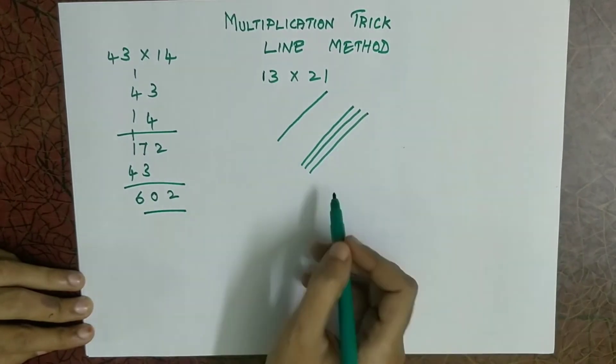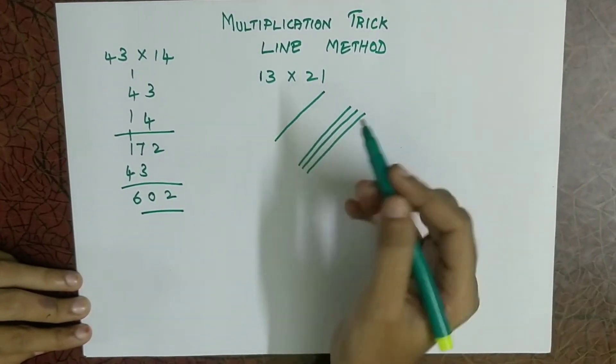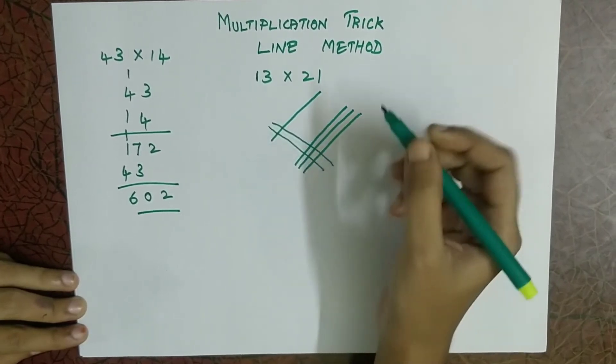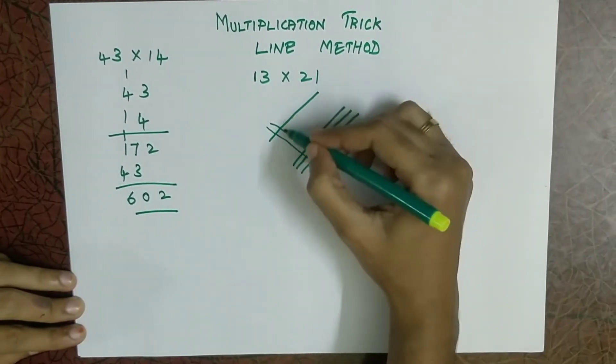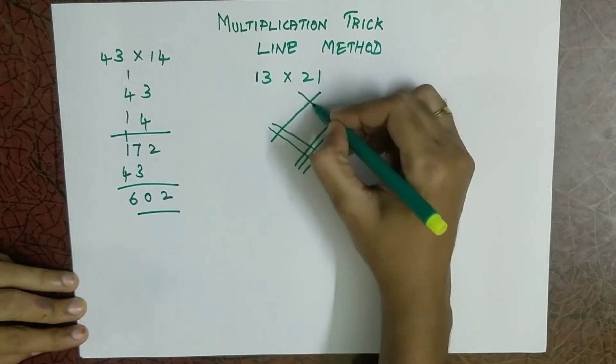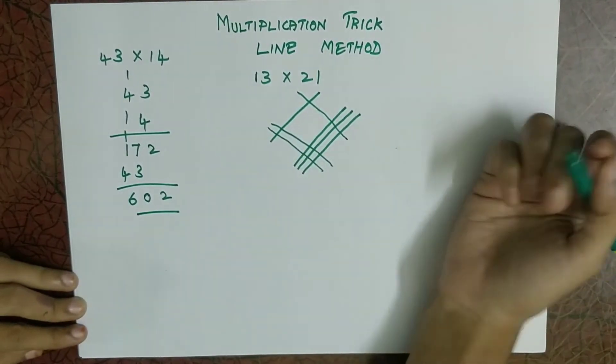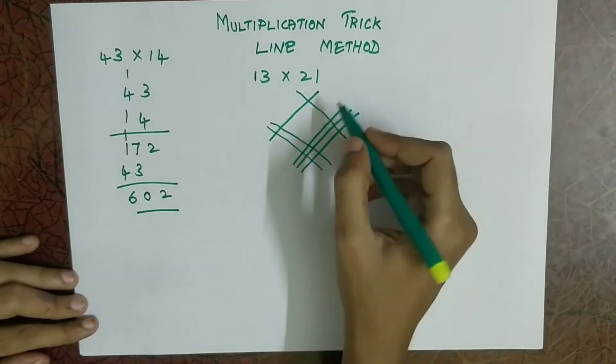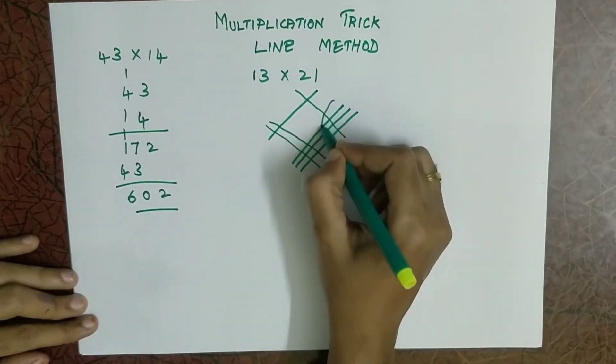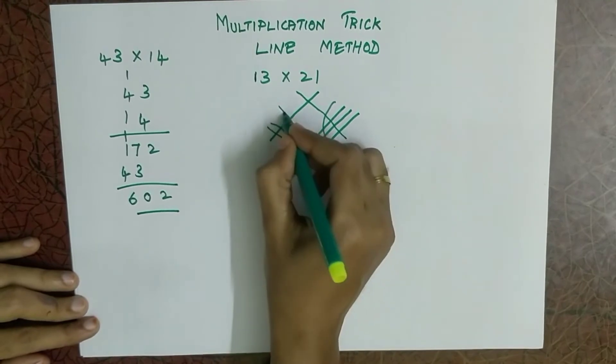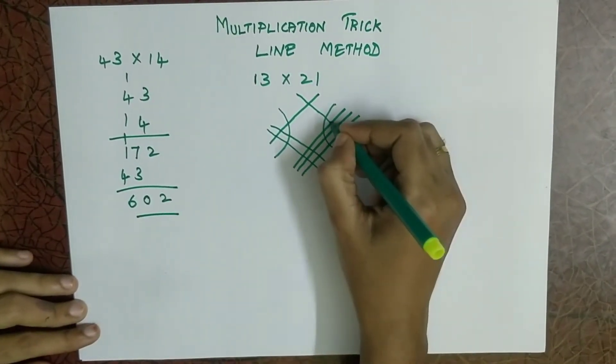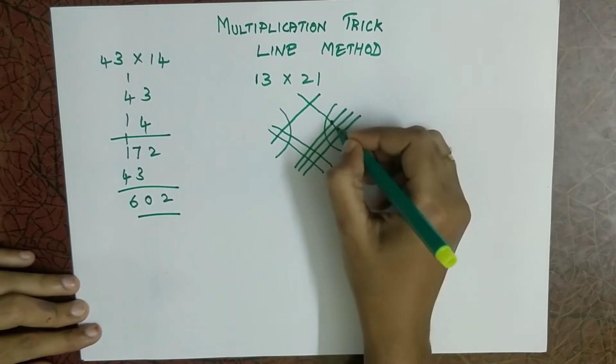So 13 is over. Now 21. So 2, 2 lines you have to draw here and then 1. So you have to leave some space and then you have to draw one line. So now we draw all the lines. So we have to separate this. Now you have to count all the joining points.